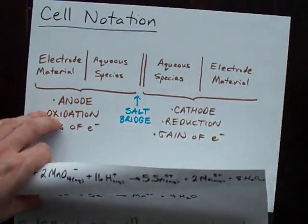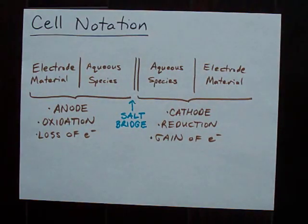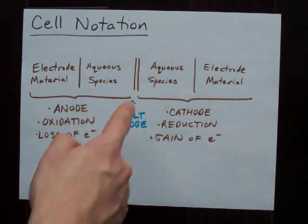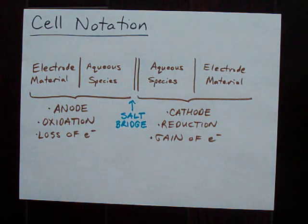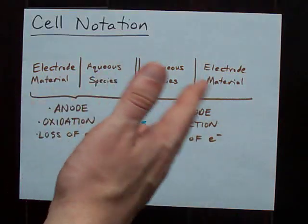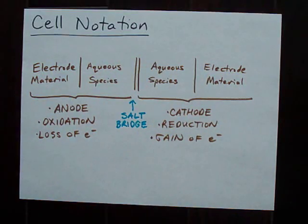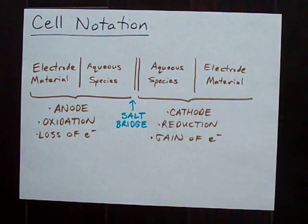All right guys. Just a little summary. Electrode material, aqueous species. Double bar for salt bridge. Aqueous species, electrode. Anode on the left. Cathode on the right. Separate all your different aqueous species with commas. If you're not given an electrode, make it platinum or graphite or something. And if you have a third phase, which I didn't show you an example of, you're just going to add another single bar in here and then list all your gases as well. Hey, best of luck making your own cell notations.